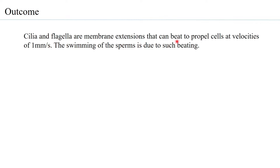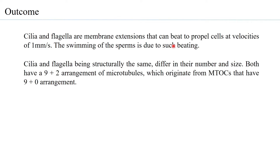Cilia and flagella are extensions that can beat — that means move — to propel cells at velocities of about one millimeter per second. The swimming of sperms is also due to such beating. Cilia and flagella are structurally the same but differ in their number and size, and both have a 9 plus 2 arrangement of microtubules.